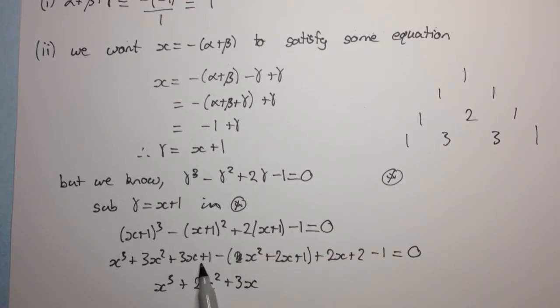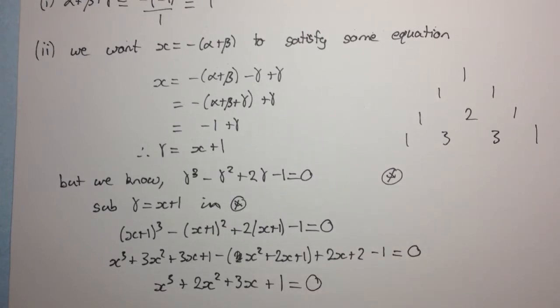And here we have plus 1 minus 1 plus 2 minus 1, so we're going to have a plus 1 equals 0. And that is your final answer.